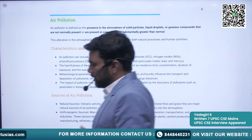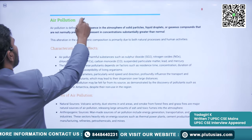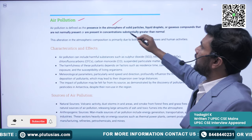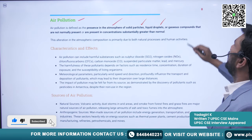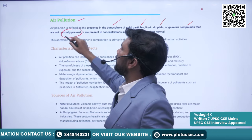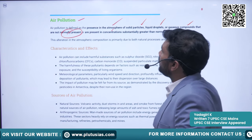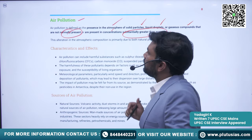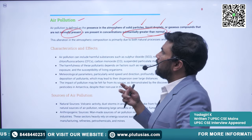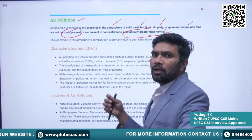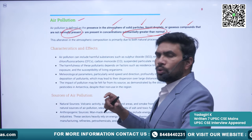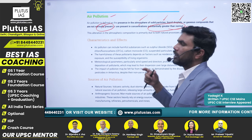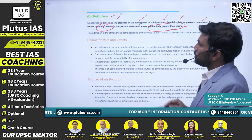Air pollution can be defined as the presence in the atmosphere of solid particles, liquid droplets, and gaseous components that are not normally present in the atmosphere, or that are present in concentrations substantially greater than normal levels. Some hazardous elements enter the atmosphere that are generally not present there, and elements already in the atmosphere may increase in quantity, causing air pollution.